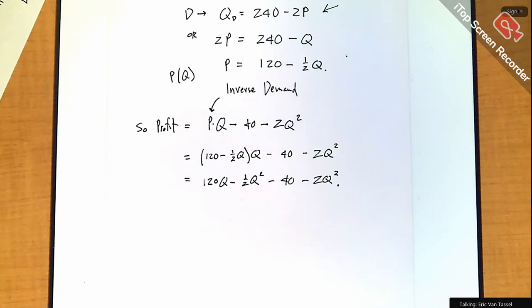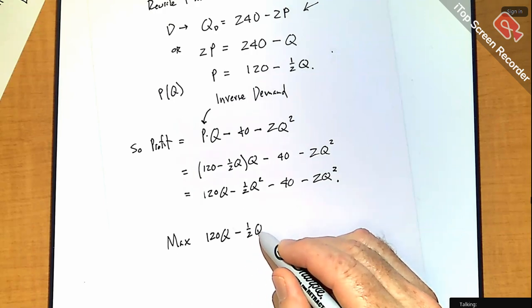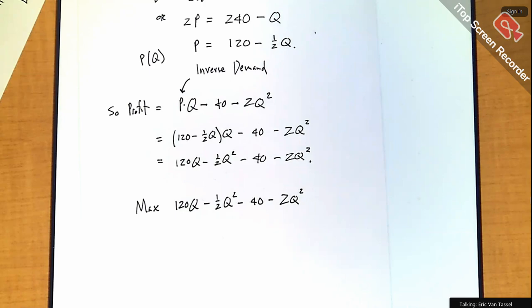That right there is just profit. All I did was get rid of the price, because we don't really control price independently. Since cost is a function of Q, I chose to make revenue also a function of Q — so we have one variable. Now I'm trying to maximize this with respect to Q.